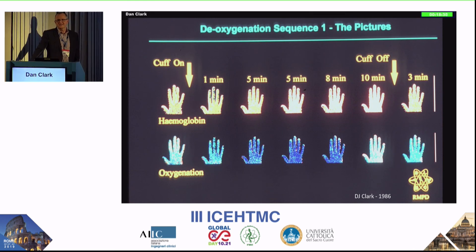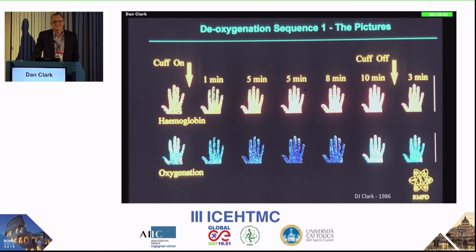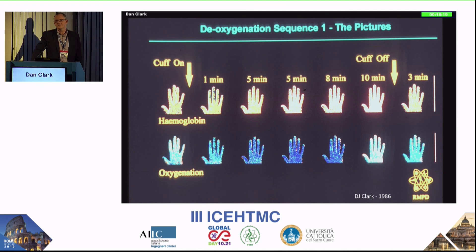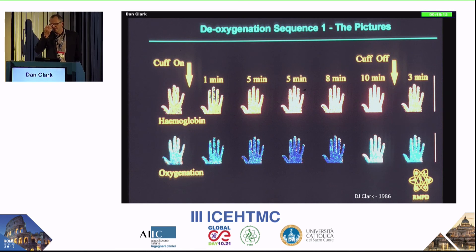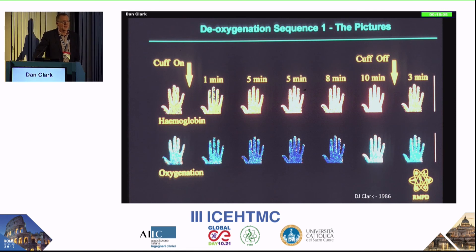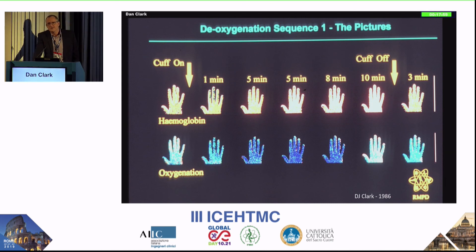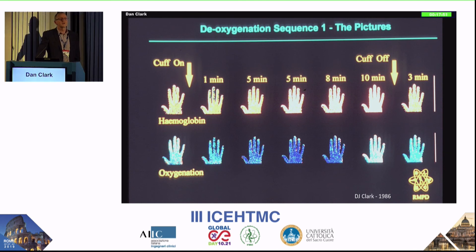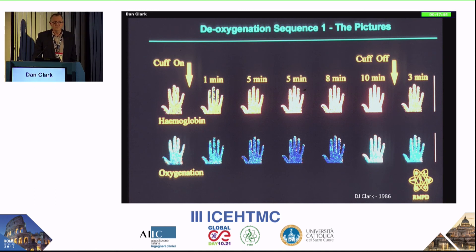I came up with this technique that I'm showing you a picture of now. I know compared to the high quality medical images we're used to seeing today these are not the greatest images you'll ever see, but look at the date on the slide — this was back in the mid-1980s. What you're looking at is a picture of my hand over a sequence of several minutes. The top row of images shows the total amount of blood — total haemoglobin — and the bottom set shows the total amount of oxygenated haemoglobin in my hand.